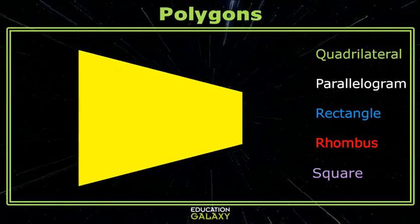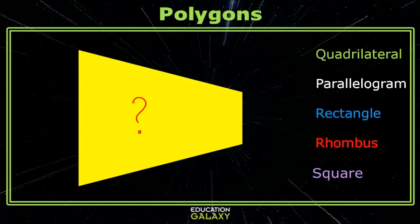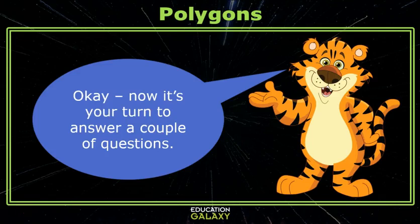Let's try one more. What do we call this shape? I see there's four sides, so it's a quadrilateral. These sides would eventually intersect, so it is not a parallelogram. If it's not a parallelogram, it cannot be a rectangle, a rhombus, or a square. Now it's your turn to answer a couple of questions.